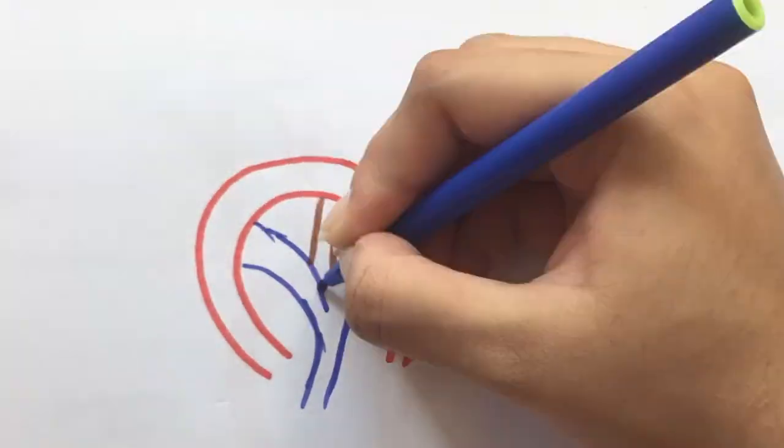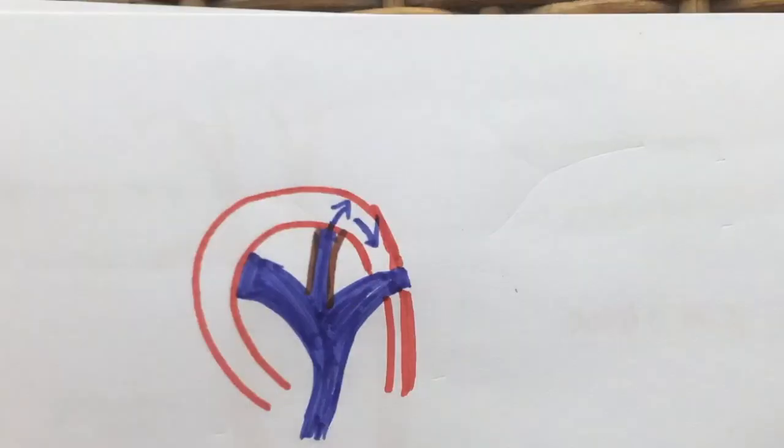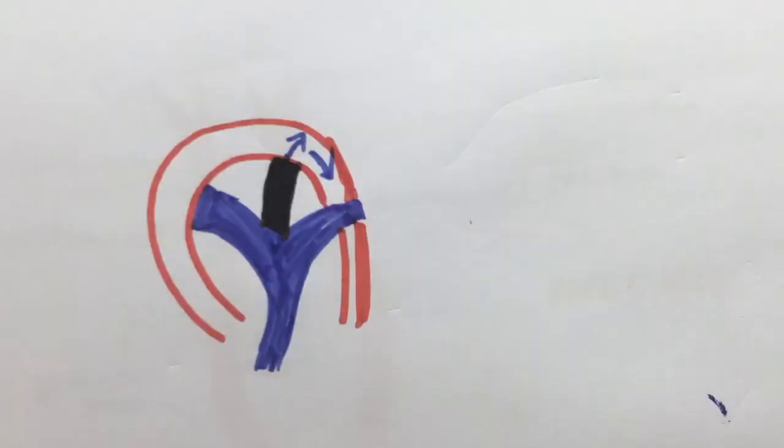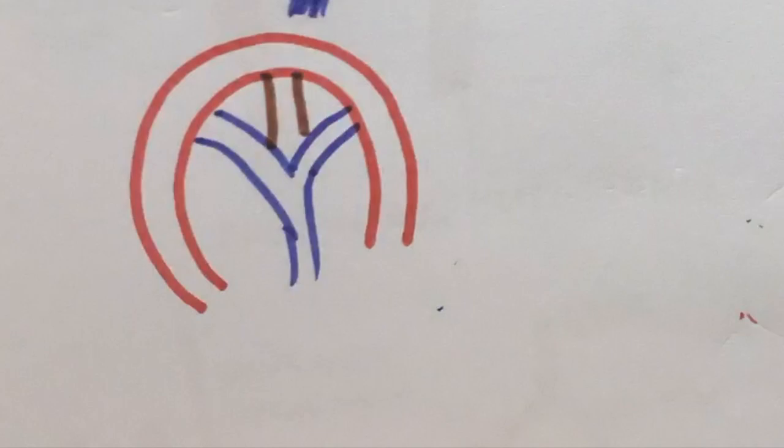Ductus arteriosus is a connection between the aorta and the pulmonary artery in the fetus. Due to increased oxygen at birth, the ductus arteriosus closes and becomes the ligamentum arteriosum. If the ductus arteriosus fails to close, it remains patent.